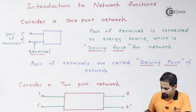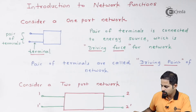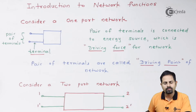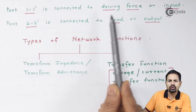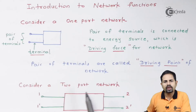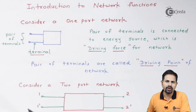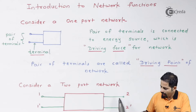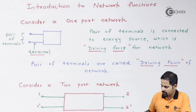Now we consider a two-port network. As seen here, a two-port network has two pairs of terminals. One is labeled one–one-dash and another is two–two-dash. Port one–one-dash is connected to the driving force. A two-port network should have four terminals in total — that is, two pairs of terminals.